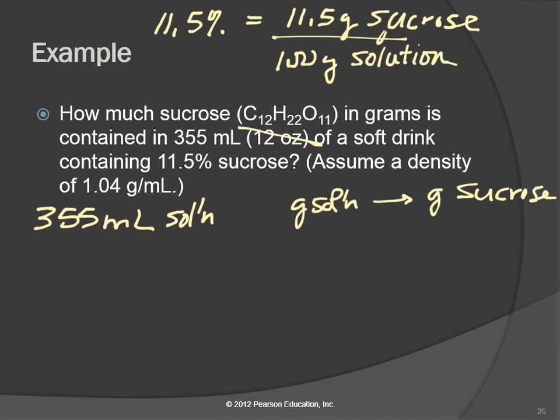So if we had grams of solution, we could get to grams of sucrose using the percent concentration. Then we have to somehow get from milliliters of solution to grams of solution. This relates grams to milliliters. That's the density of the solution. So we figured out our path, and now we're going to write in our unit. So this is milliliters of solution.